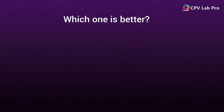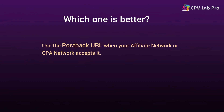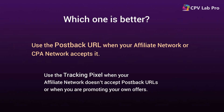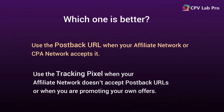So which one is better to use? Both tracking methods are accepted by CPV Lab Pro and you can use the one you feel more comfortable with. Our advice is to always use the postback URL when your affiliate network or CPA network accepts it, because it offers more accurate results and won't miss conversions even if the integration may be more complex. Use the tracking pixel when your affiliate network doesn't accept postback URLs, or when you are promoting your own offers and have full control over the offer and the confirmation or thank you page.